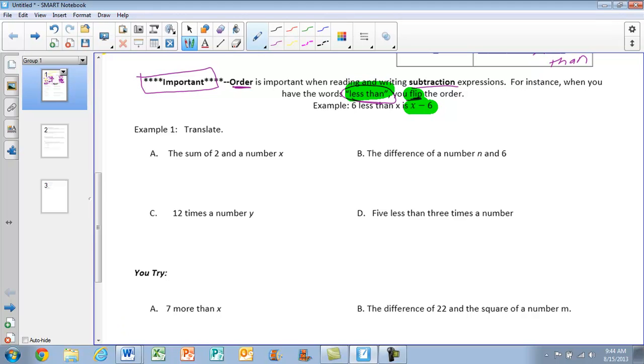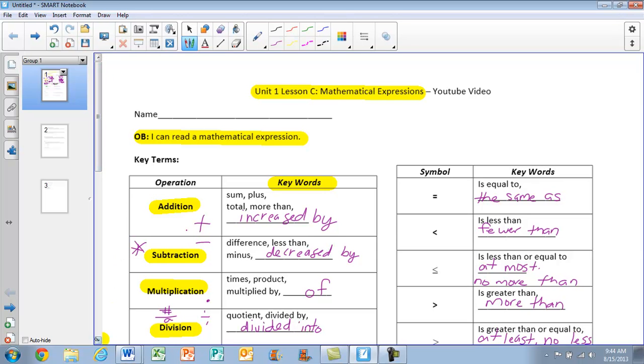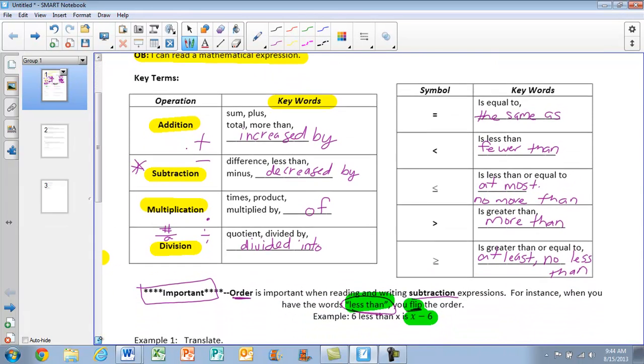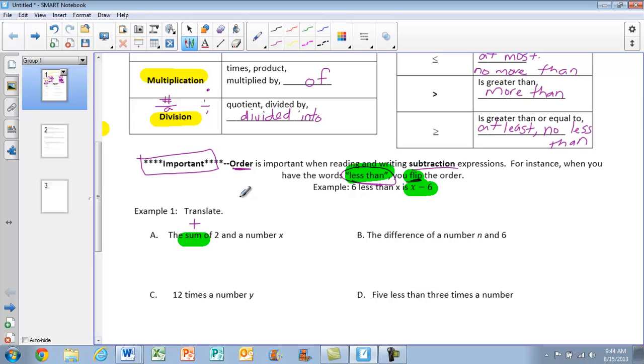The first one says the sum of 2 and a number x. Well, we know the sum means addition. If we go back up to our keywords up there, sum is addition. So we're going to be adding 2 and x. So, 2 plus x.